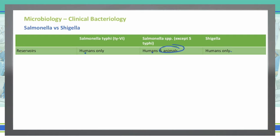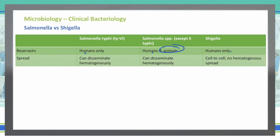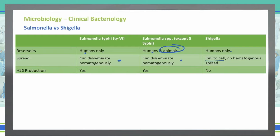How do these spread? Hematogenously is going to be the way that all Salmonella species are spread, whether it's typhi or all of the others. Shigella, however, does not spread through the blood — it's only going cell to cell. Do any of these produce hydrogen sulfide? All of the Salmonella species do, but Shigella does not.